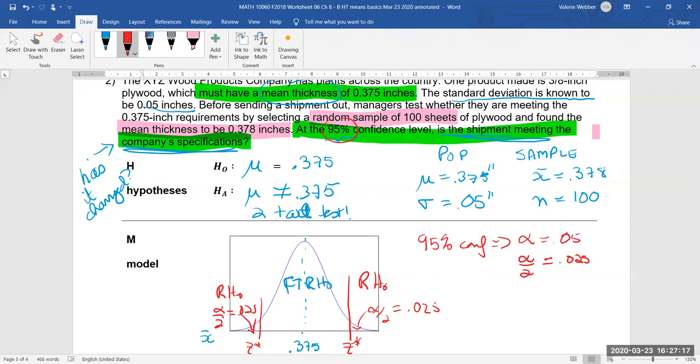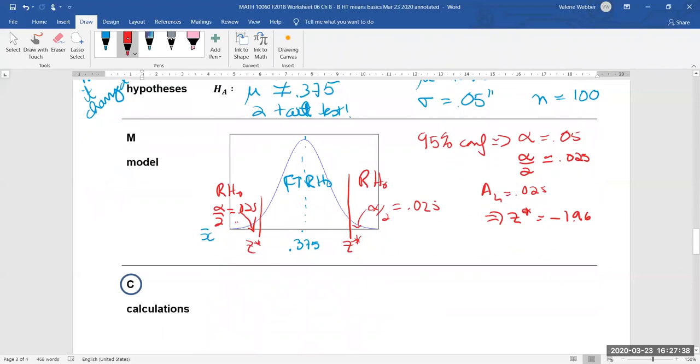So here we can say the area to the left is 0.025 from the lower one here, and that's going to imply that z-star equals, if we look this up, negative 1.96. And because we have a low value and a high value, this is negative 1.96, and from symmetry conditions this is positive 1.96.